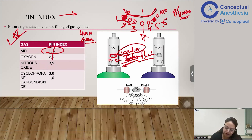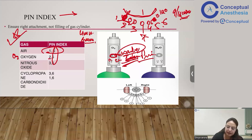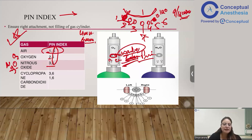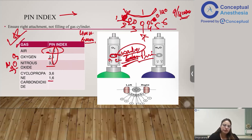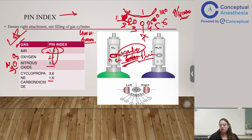A helpful mnemonic to remember the pin index: the number 5 is common to air, oxygen, and nitrous. Air has a single letter 'A' — so it's 1 and 5. Oxygen is written as O₂, so it's 2 and 5. Nitrous oxide is N₂O, giving 3 and 5. Additionally, cyclopropane is 3 and 6, and carbon dioxide is 1 and 6. The most commonly examined are air (1,5), oxygen (2,5), and nitrous oxide (3,5).